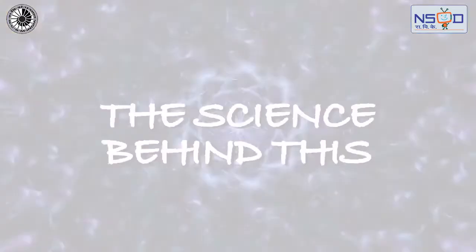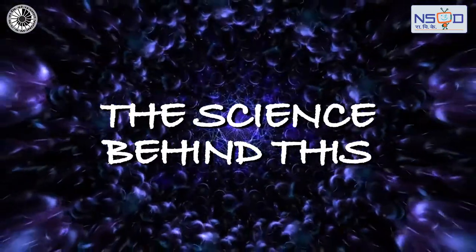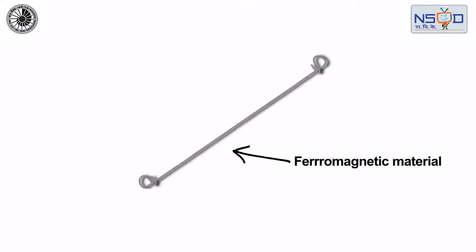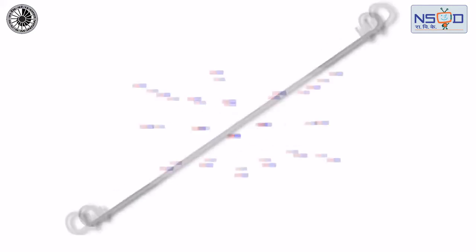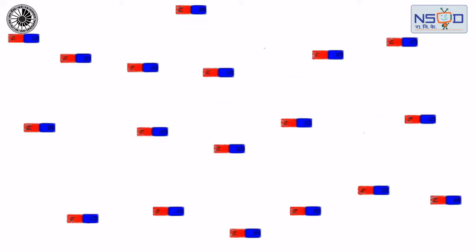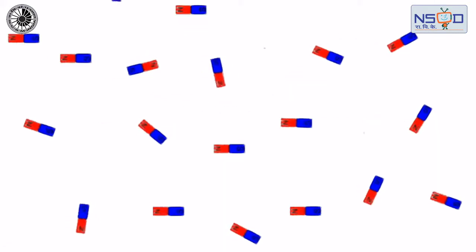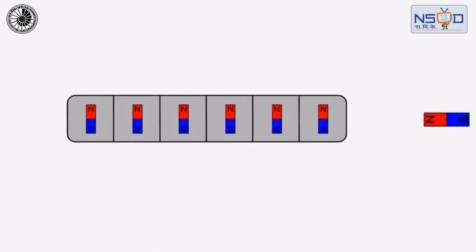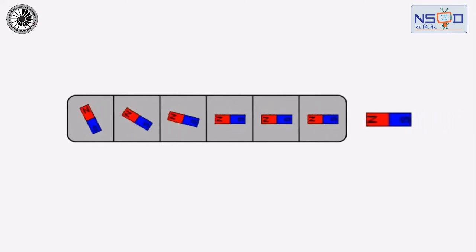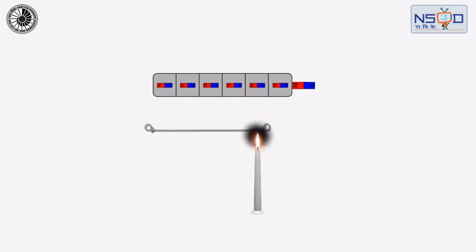In a ferromagnetic material, elementary dipoles are aligned in so-called domains, and the domains, through their arrangement, bring about the internal magnetic field of the material. At a certain temperature, the ordered state is destroyed and magnetic dipoles become chaotically disordered.